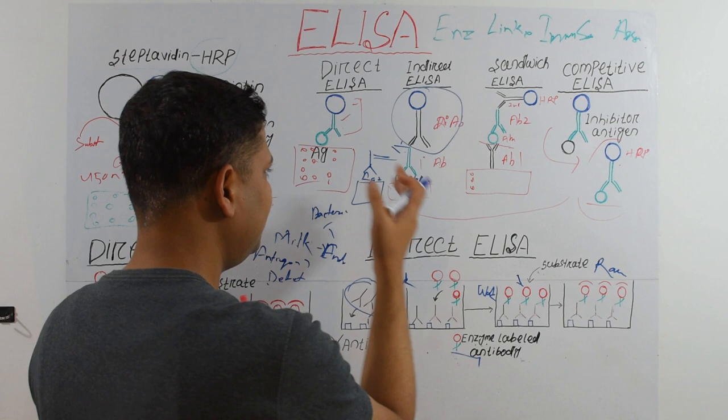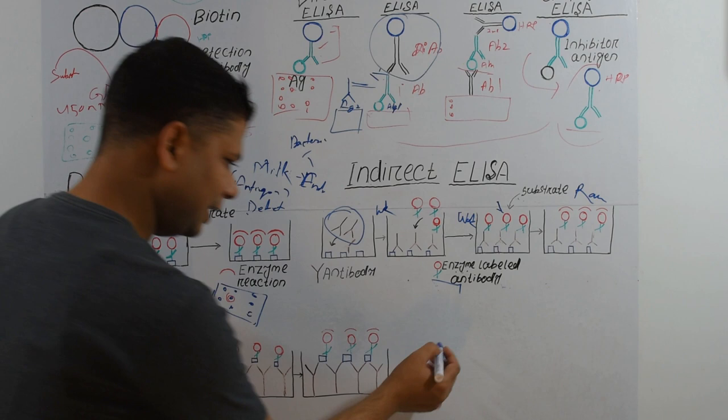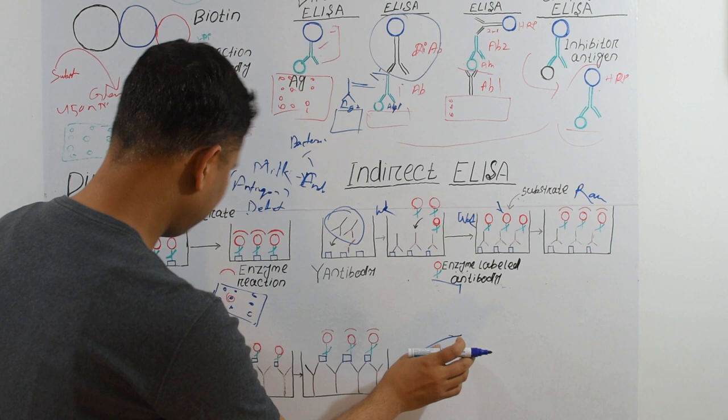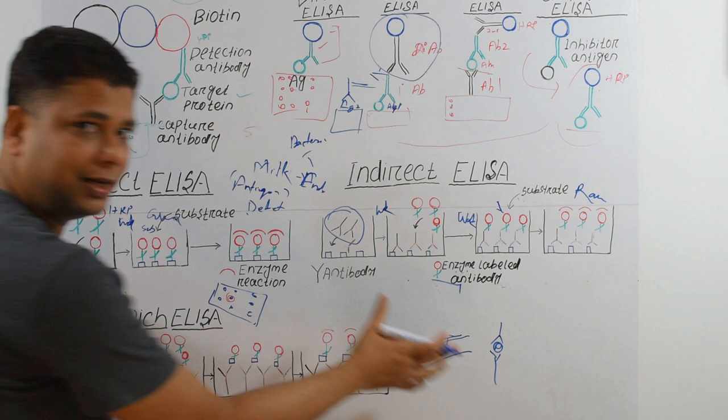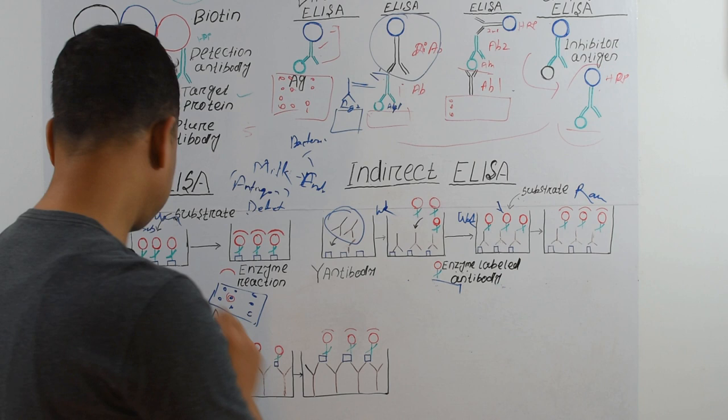Now we'll discuss Sandwich ELISA. Just like a sandwich where two slices have material in between, in Sandwich ELISA our antigen is placed between two antibodies — that's why it's called Sandwich ELISA. We'll take the COVID antigen test as an example, since we have recently been going through COVID.